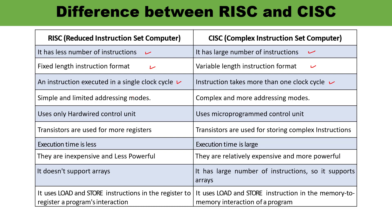In the case of RISC, it has simple and limited addressing modes — approximately four — while CISC has complex and a larger number of addressing modes.